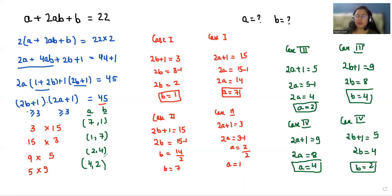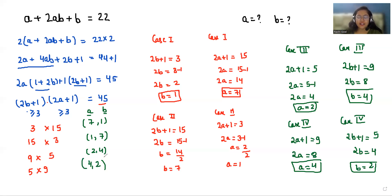So we have four values of (a, b): (7,1), (1,7), (2,4), and (4,2). I hope it's clear and easy to follow. If you find it useful, please give us a thumbs up and share with your family and friends. Thank you.